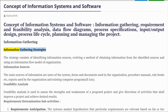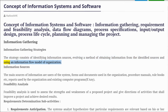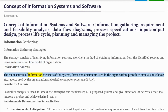Information gathering strategies consist of identifying information sources, evolving a method of obtaining information from the identified sources, and using an information flow model of the organization.